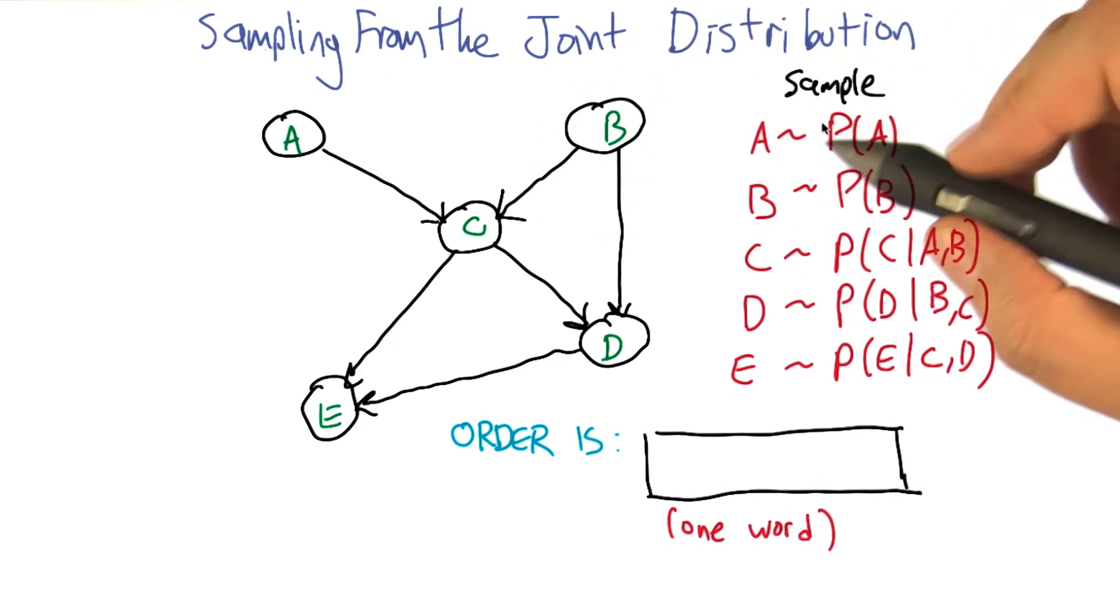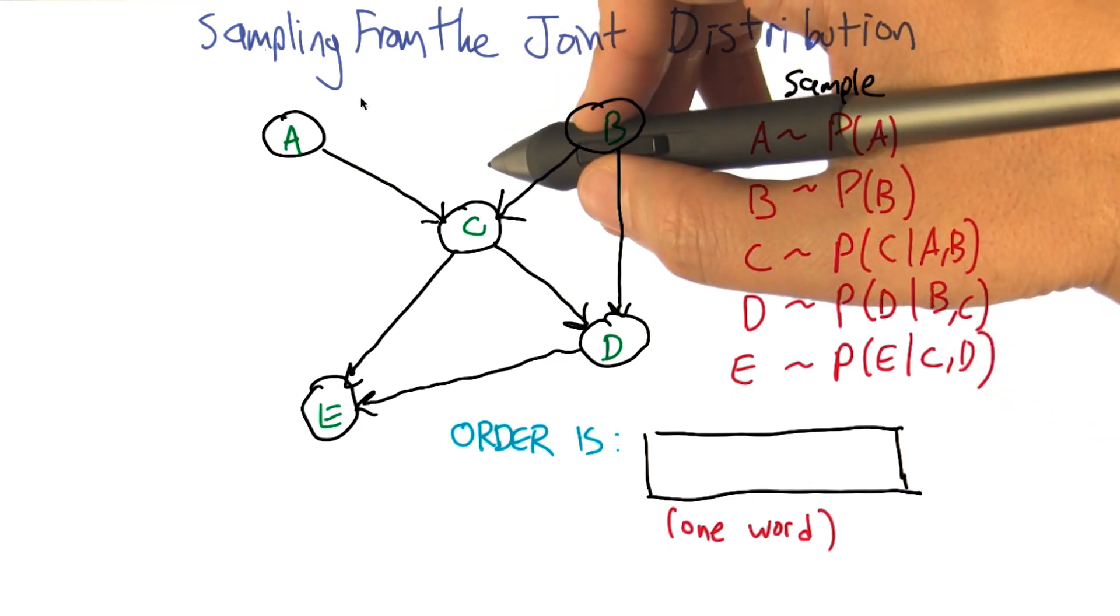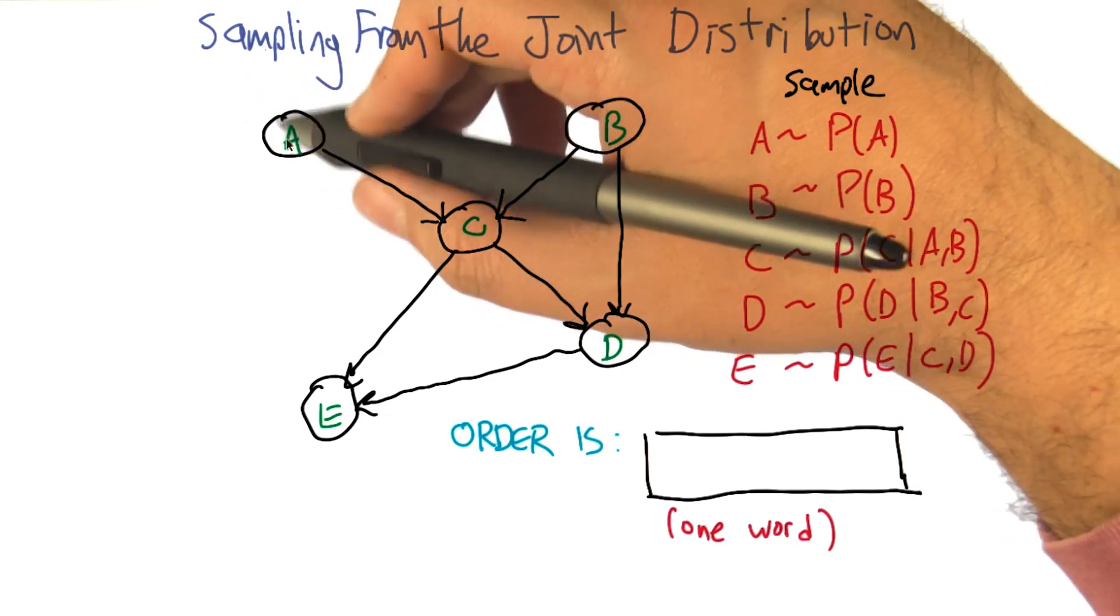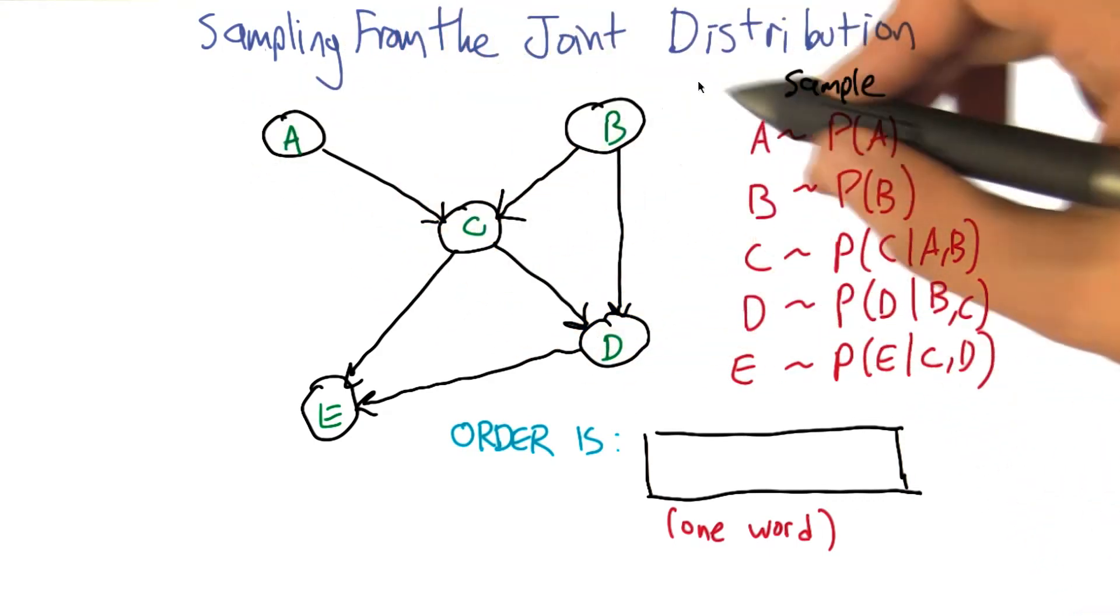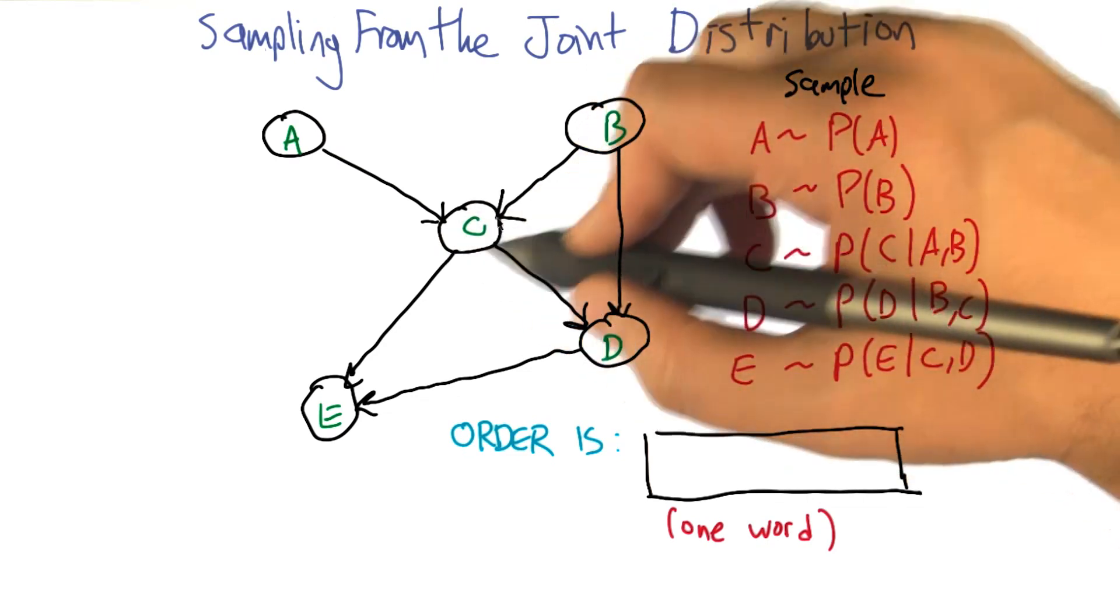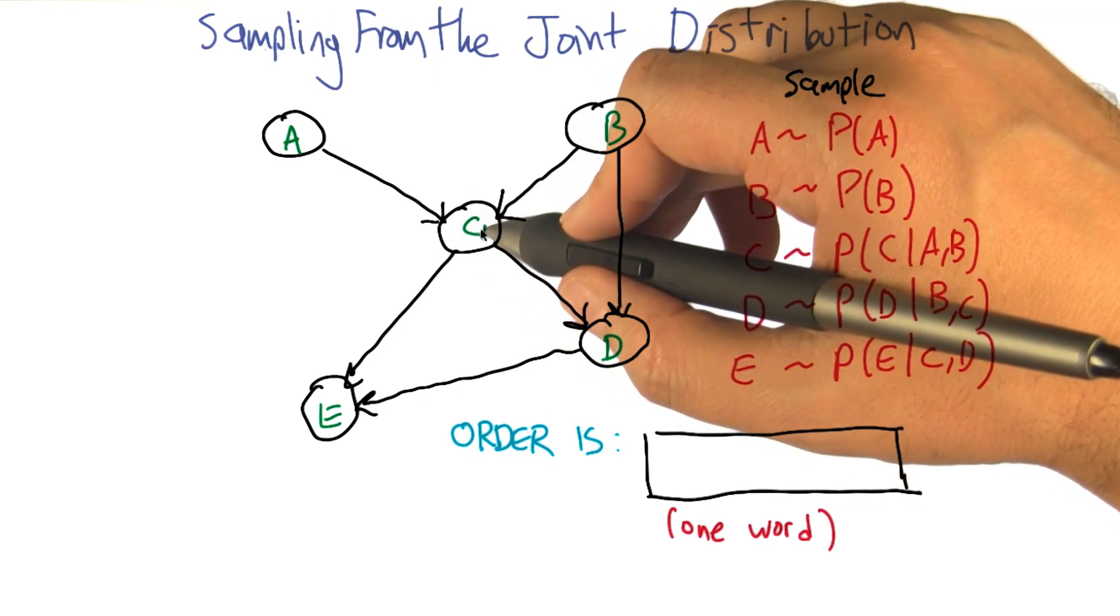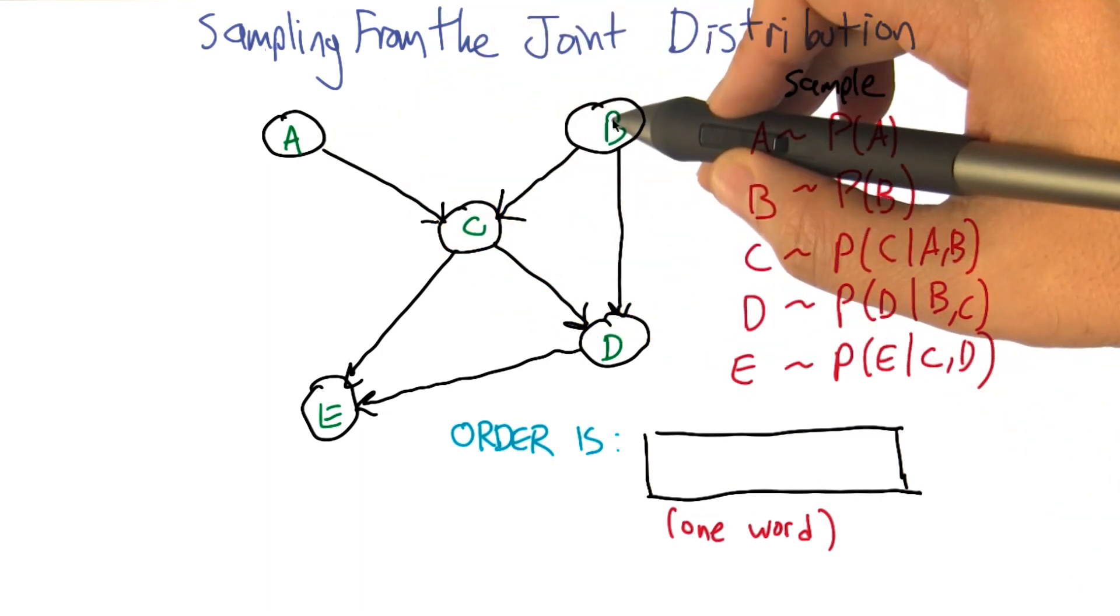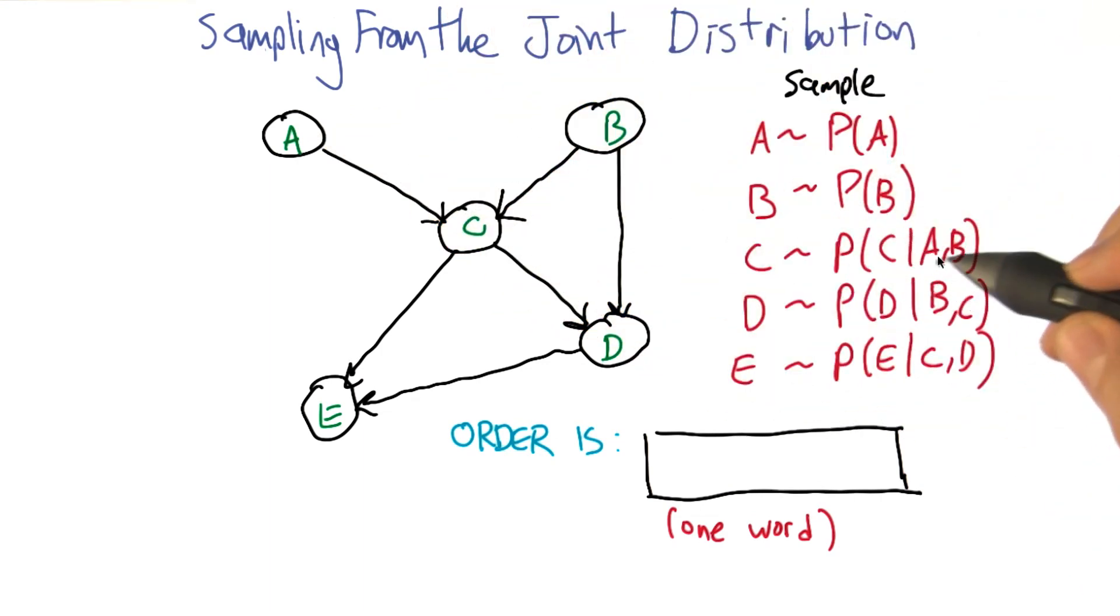So it turns out what we can do is if we sample from A, now A has no incoming arrows, so it's not conditioned on anything in particular. So we can sample directly from A's distribution. We can do the same for B. And now C, if we want to sample from C, we need to make use of what values have already been selected for A and B, because C is conditioned on A and B.